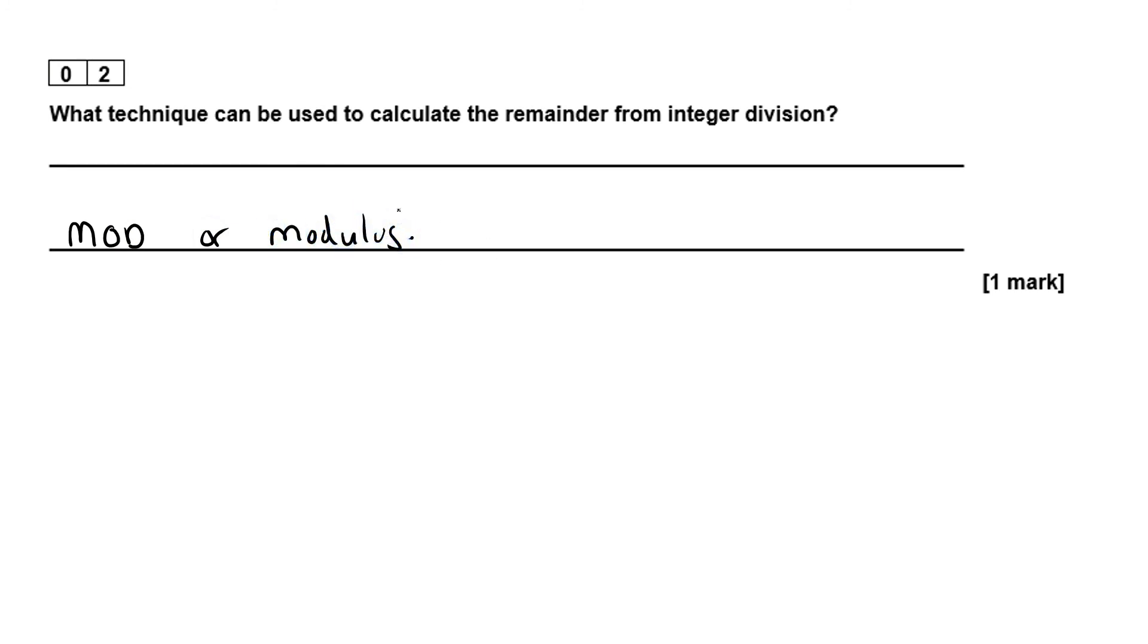Either of those would give us the correct answer. It's only saying 'what' and it's only worth one mark, so you literally just have to write the answer. What technique can be used to calculate the remainder from integer division? So remember integer is a whole number and we're working out the remainder.